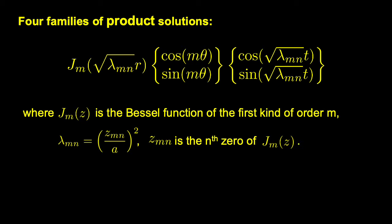There are four families of product solutions, shown here, where J_m is the Bessel function of the first kind of order m, and the eigenvalue lambda_mn is the square of the nth root of J_m divided by a, the radius of the membrane.